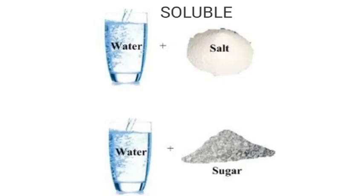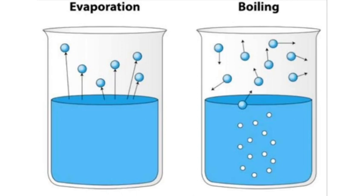When the solid is soluble in the liquid, the process of evaporation is used. Examples include water and salt mixture, or water and sugar mixture. Evaporation and boiling are two methods. Boiling increases the rate of evaporation because heating is applied. Evaporation occurs only from the surface, but boiling occurs from the bulk of the liquid.